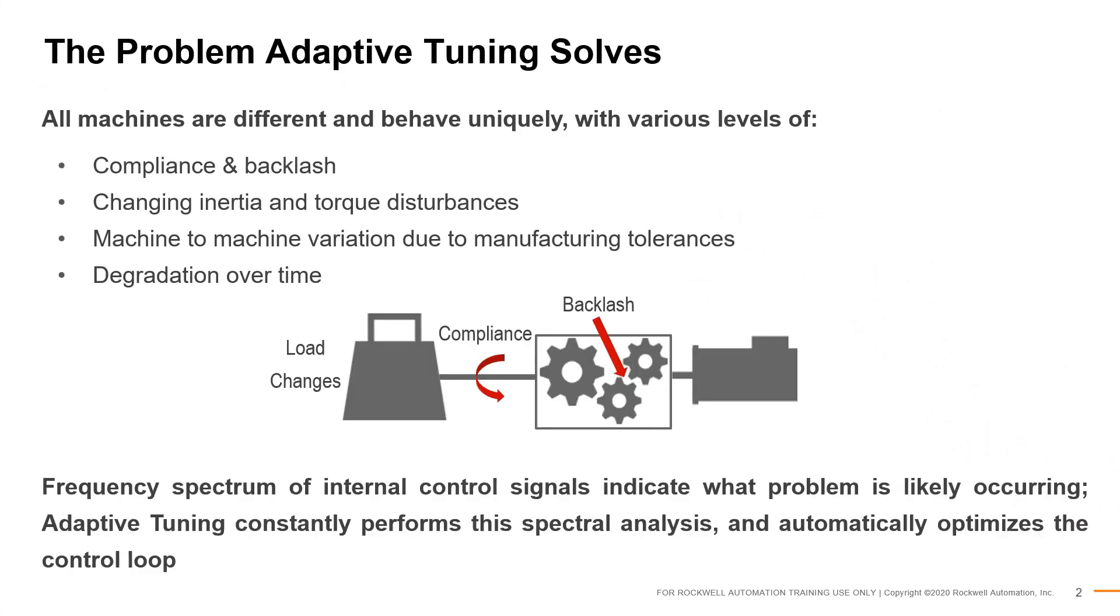A key challenge for controls engineers is that of finding an optimal tune for our systems quickly and reliably. An optimized tune depends heavily on the system characteristics. Each machine behaves differently due to variations in compliance, backlash, changing loads, manufacturing tolerances, machine degradation, and many more factors.